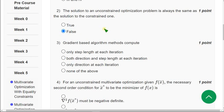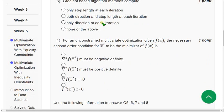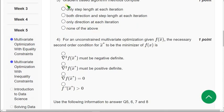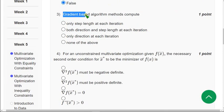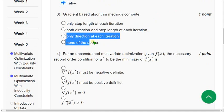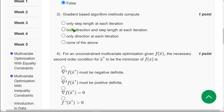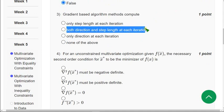Moving on to the third one. Gradient-based algorithm methods compute. Definitely, these two are not the answers. And we have to compute in the formula. They will mention both the step size and also the direction. So I think second option is the correct one.